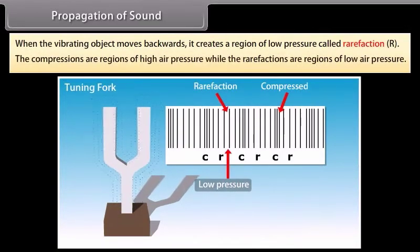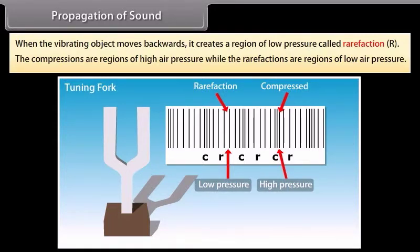The compressions are regions of high air pressure while the rarefactions are regions of low air pressure. Look at this image. It shows a sound wave created by a tuning fork and propagated through the air in an open tube. These are the regions of compression and these are the regions of rarefaction.